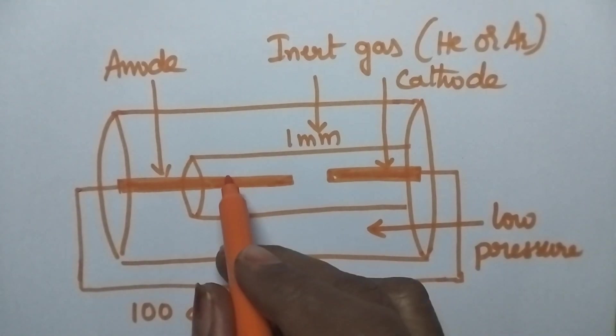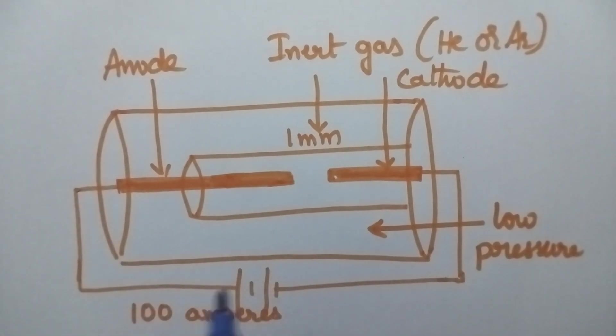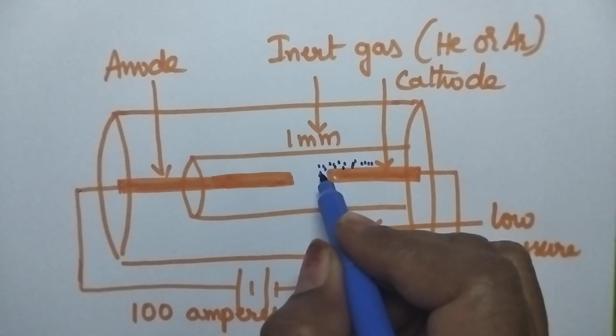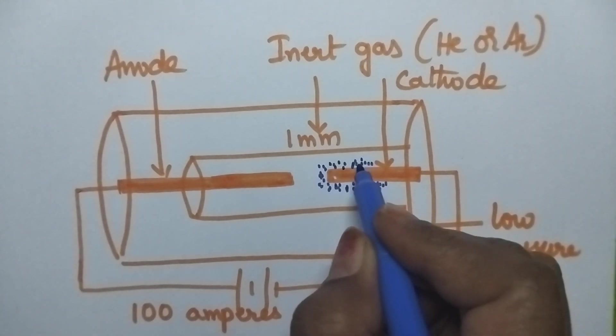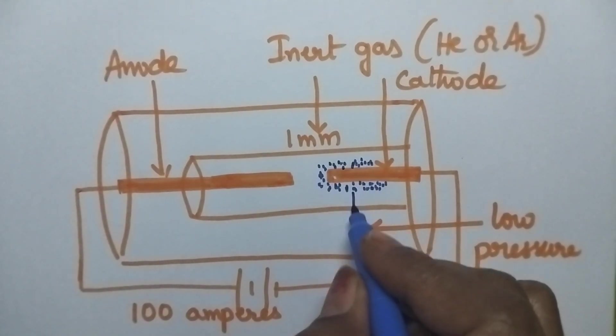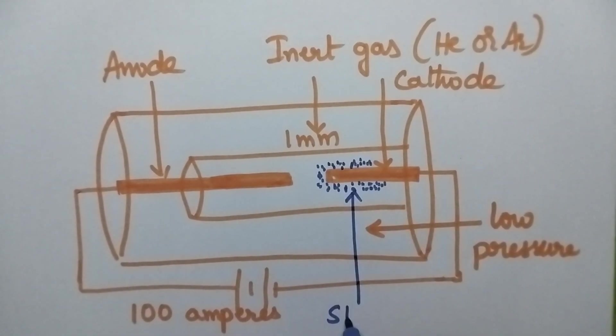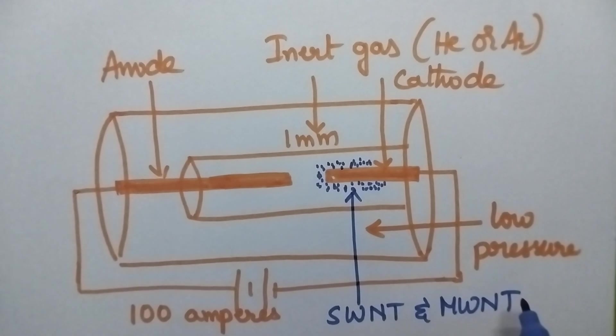As a result, the anode rod undergoes evaporation and carbon nanotubes are deposited on the cathode. When the dimensions of these carbon nanotubes are examined, they have both single-walled and multi-walled nanotube dimensions.